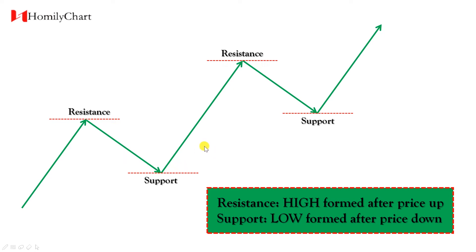Why? Because when price goes up to a place and cannot go further but turns downwards, that means this place has resistance. Similarly, when price goes down to a place and cannot go further but turns upwards, that means this place has support.